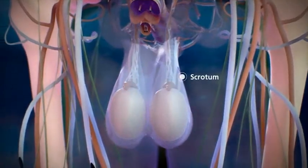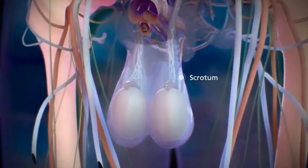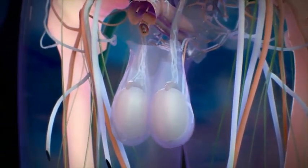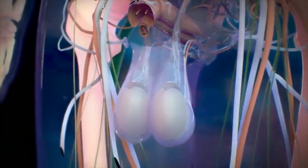Surrounding the testes is the scrotum. This thick skin sac protects the testes and also keeps them slightly cooler than body temperature for normal sperm development.